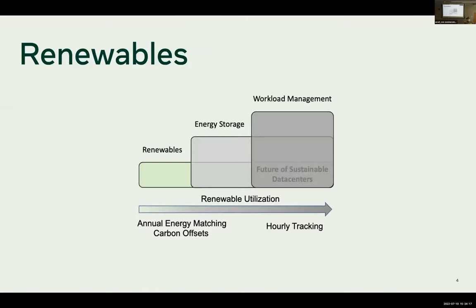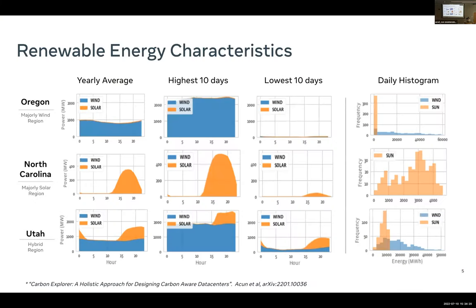Renewable energy characteristics are highly variable. In this chart, you see three selected regions from Meta's data centers in the US: Oregon, North Carolina, and Utah. There are wind-only regions, solar-only regions, and hybrid regions. Renewable energy not only varies region to region, but also varies significantly from hour to hour and day to day. The last column quantifies the variance over the year as a daily histogram.